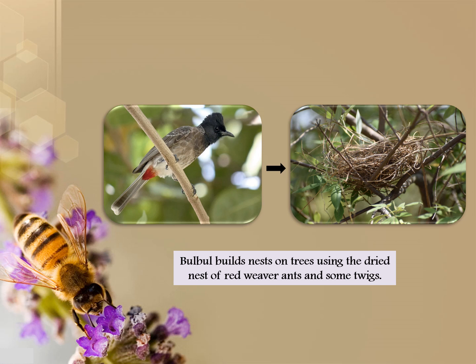The red-vented bulbul builds its nest on trees using the dried nest of red weaver ants and some plant material. The dried nests of red weaver ants have anti-fungal and anti-bacterial activity, so the bulbul uses them to protect its nest, chicks, and eggs against fungal or microbial infection.